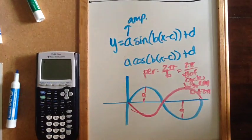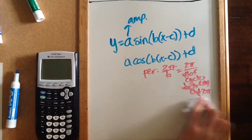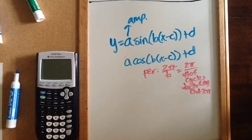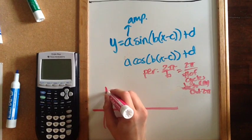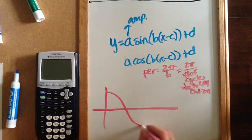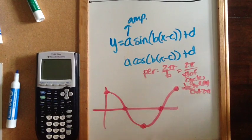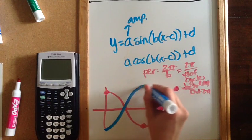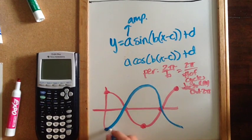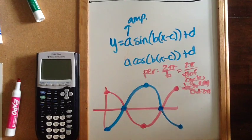For cosine, your graphs look slightly different. Your cosine graphs start at the top, so your cosine graph goes: top, middle, bottom, middle, top — and that is one cycle for cosine. For negative cosine, this right here is one cycle or period.